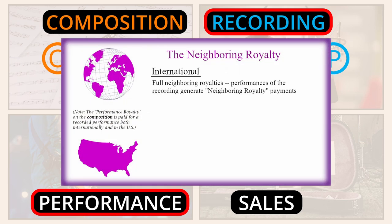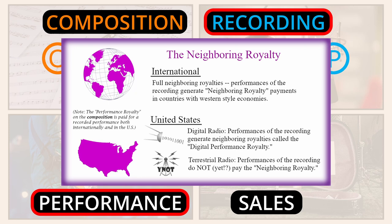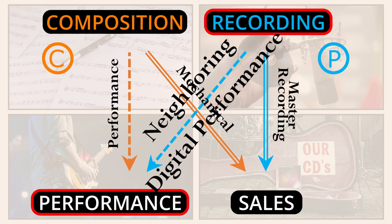Neighboring royalties are only fully recognized and paid outside the United States. In the US, only the digitally based, non-interactive streaming services pay neighboring royalties — these are satellite, internet, and cable-based radio services like Sirius XM and Pandora. In contrast, traditional over-the-air terrestrial radio stations in the US do not pay these royalties. When your song on a CD is broadcast on terrestrial radio, a performance royalty for the song is paid, but not the neighboring royalty for the recording. Due to this difference, the neighboring royalty paid by non-interactive digital streaming services in the US is instead called the digital performance royalty. So those are our four royalty types: master recording, mechanical, performance, and neighboring or digital performance.